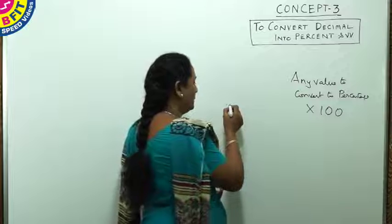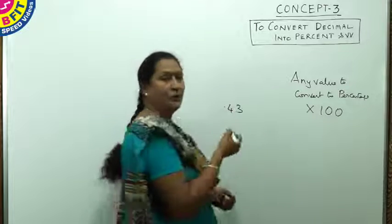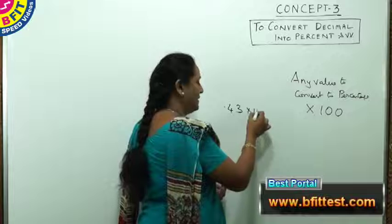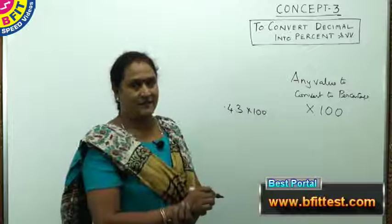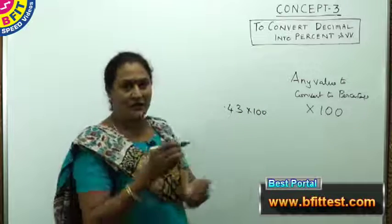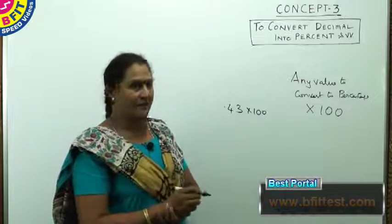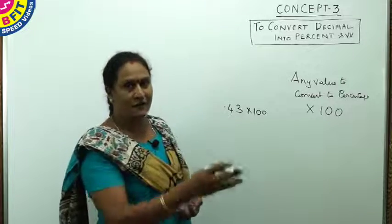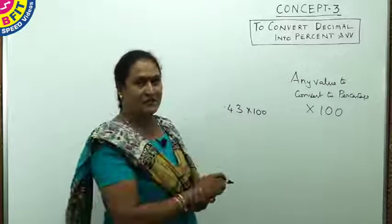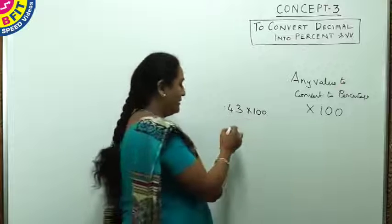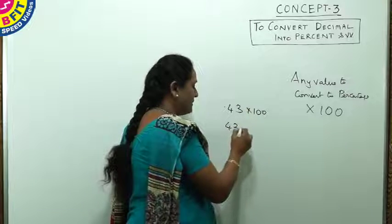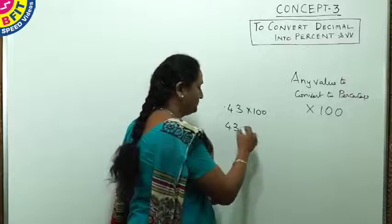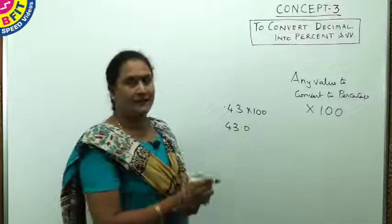You have a decimal 0.43. What will be the percentage equivalent? Multiplying this with 100, we get the percentage. For a decimal, to multiply it with 100 and find the percent, you just shift the decimal two places to the right. Multiplying by 100 is like shifting the decimal places two places right of the number, so you get an integer.